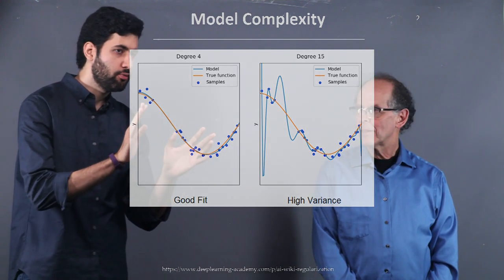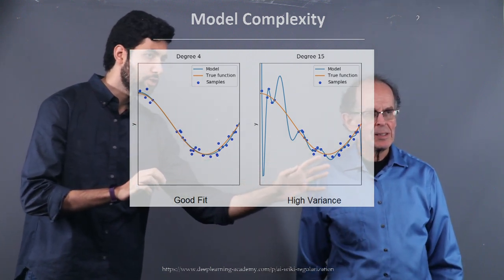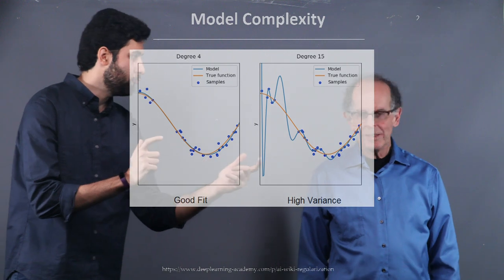Here we use a polynomial of degree 4 and here we use a polynomial of degree 15. So, which one do you like better?